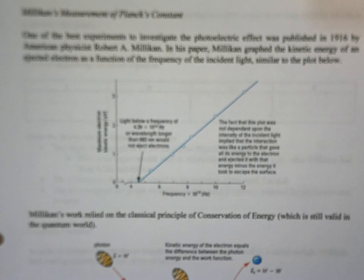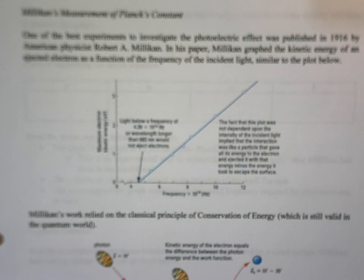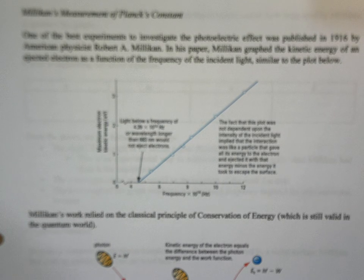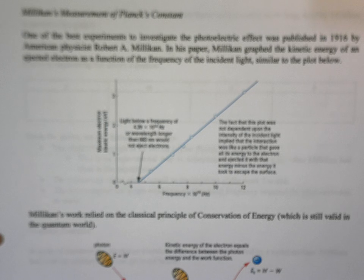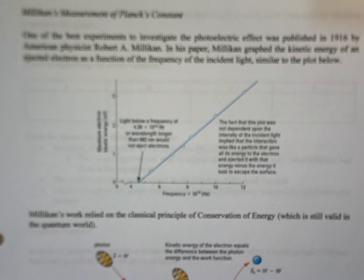In the equations for the work function and Planck's equation, we've had Planck's constant. Now we have the luxury of knowing what Planck's constant is, but back in the day it had to be determined. That determination came from Millikan — the same Millikan who discovered the quantization of charge and the value of the elementary charge. What Millikan did was look at the kinetic energy of electrons emitted from a metallic surface, and he plotted that energy as a function of frequency.